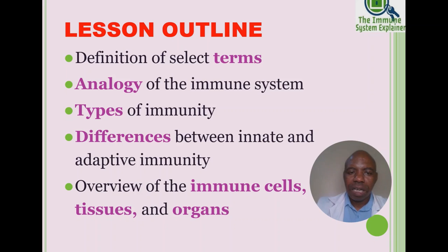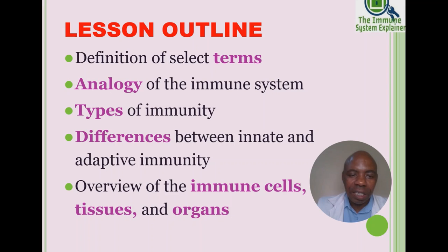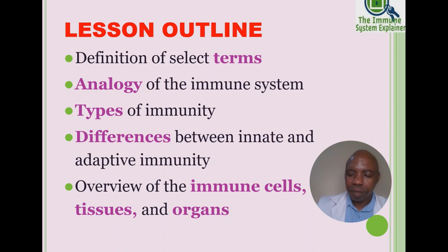The lesson outline covers: definition of select terms, an analogy of the immune system, types of immunity, differences between innate and adaptive immunity, and an overview of the immune cells, tissues, and organs of the immune system.